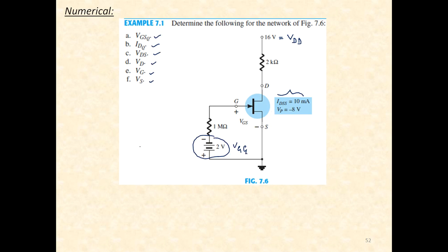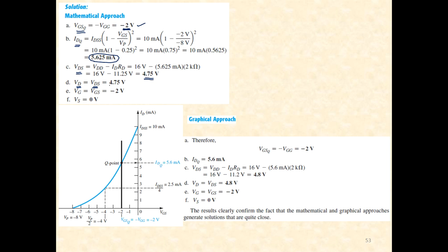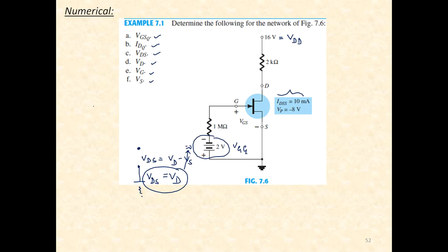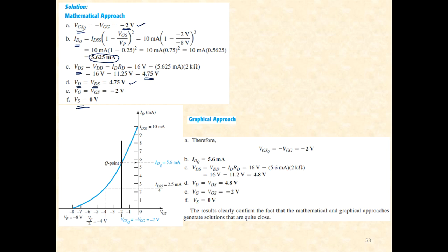VD equals VDS because the source terminal is directly grounded — there is no source resistor. Since VDS equals VD minus VS, and VS is zero (source is grounded), VD equals VDS which is 4.75 volts. VG equals minus VGG, which is minus 2 volts, and VS is 0 volts since the source terminal is directly grounded.